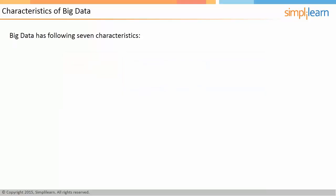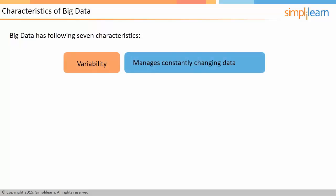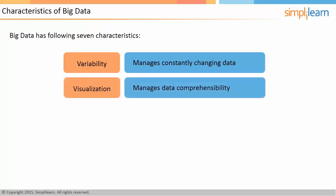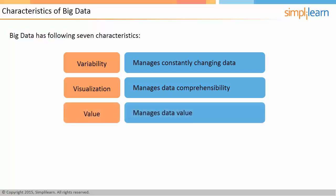Big data is also Variable, meaning the meaning of data is constantly changing, which makes it relevant in sentiment analysis. Algorithms need to understand context and decipher the exact meaning of a word in that context. Visualization makes voluminous data comprehensible — complex graphs can include variables of data while remaining understandable and readable. The Value of data lies in analyses that turn data into information, followed by knowledge, allowing organizations to become information-centric.